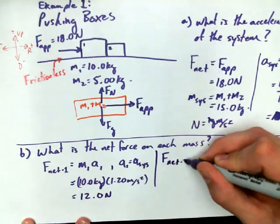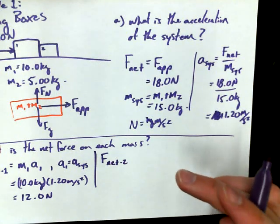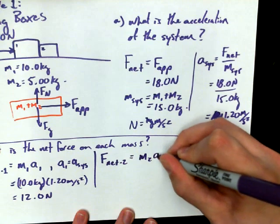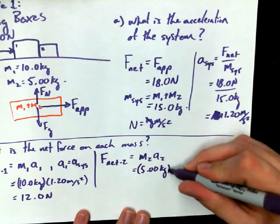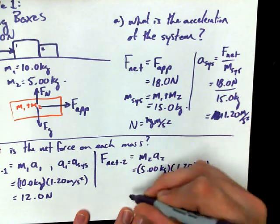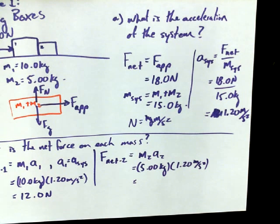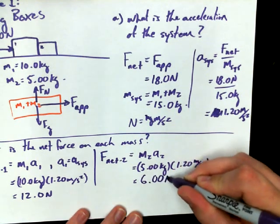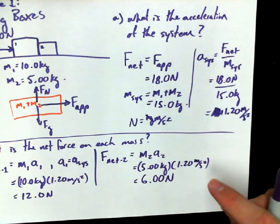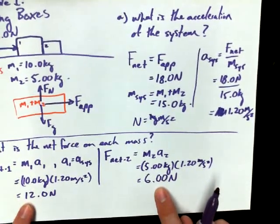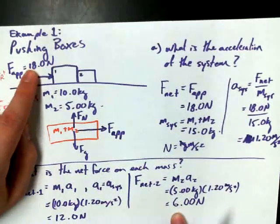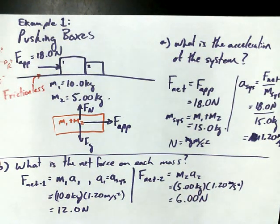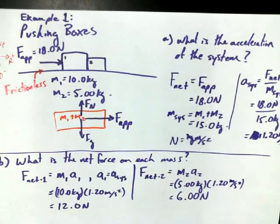And if we tackle mass 2, it's pretty much the same process, making the same assumption that mass 2 is going to accelerate along with the system, so at 1.20 meters per second squared. 5 times 1.2, what do you get? 6.00. Yeah, 6.00 newtons. So we have the net force of 6 newtons on mass 2 and 12 newtons on mass 1. And actually, do you think it's a coincidence here? What's 12 plus 6? Holy moly. I've seen that number before. So there might be something to that. I don't want to hang my hat on it just yet, but there might be something to it.